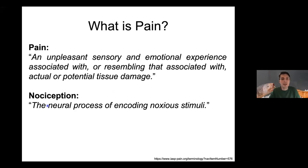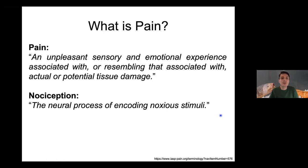We need to contrast pain with another word: nociception — the neural process of encoding noxious stimuli. This is really about how a nerve gets switched on to send a signal that makes you go 'ouch.' In my lab we work primarily with mice and naked mole rats, though we also work with humans. The biggest difference is you can ask a human how they're feeling; you can't do that with a mole rat. So we can only infer what they might be feeling, and we tend to use nociception and pain as overlapping but distinct terms.